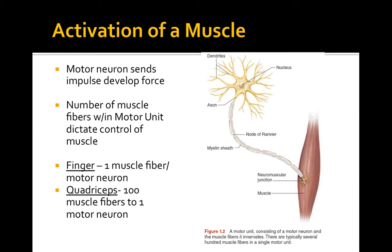When the motor neuron sends an impulse down the nerve cell, it stimulates the contraction of a muscle. Depending on what type of muscle the nerve is bound to dictates how it will fire. You can have a nerve bound to one muscle — this would occur in fingers or the muscles of the eyes, where finer movements need to be more precise and accurate.